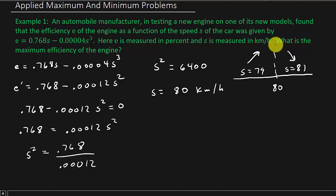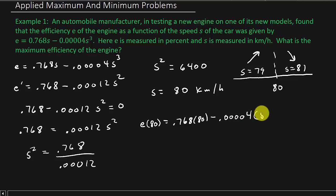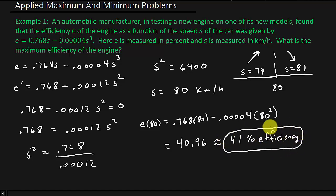They want to know the maximum efficiency of the engine. So we take the 80 and plug it back into the original: E of 80 equals 0.768 times 80 minus 0.00004 times 80 cubed, and this gives us 40.96. So we can say about 41% efficiency — that's your answer. That's the first example, and all of the problems are worked just like this.